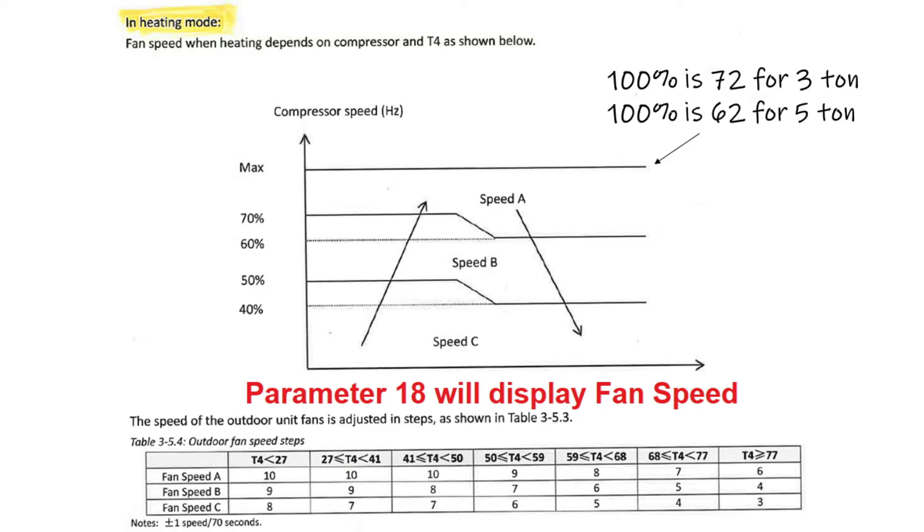And for either the cooling or the heating, remember parameter 18 displays the fan speed. You can pull up the speed and make sure it matches your heat or cool fan chart. Make sure your speed is where it should be.